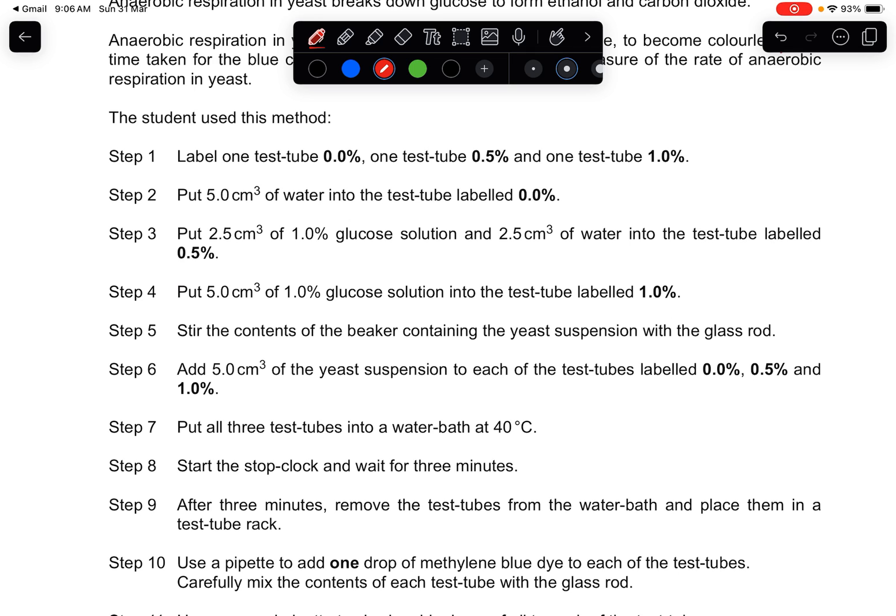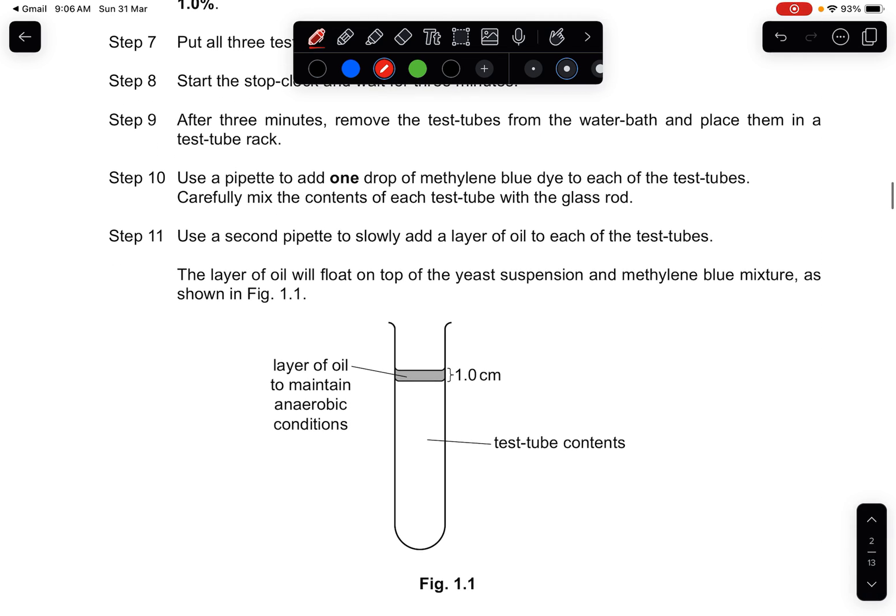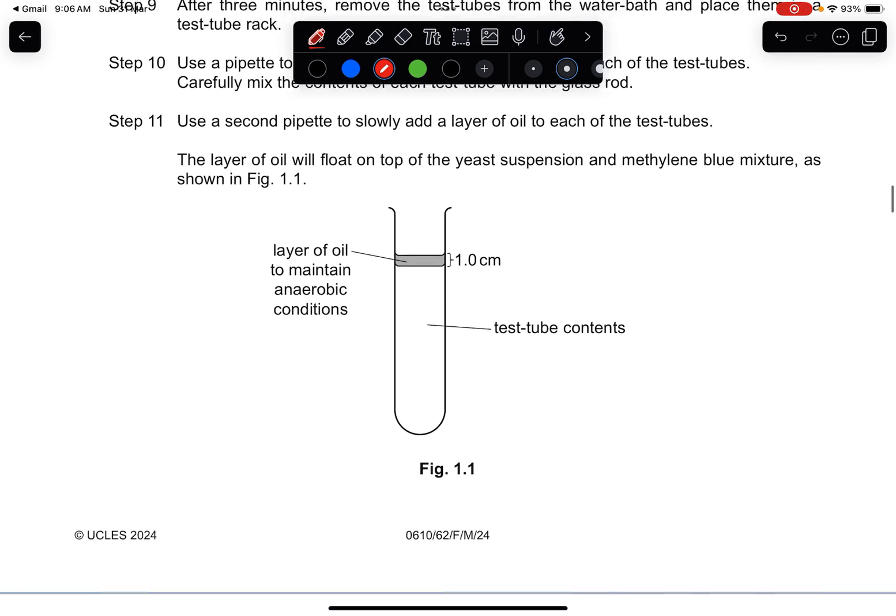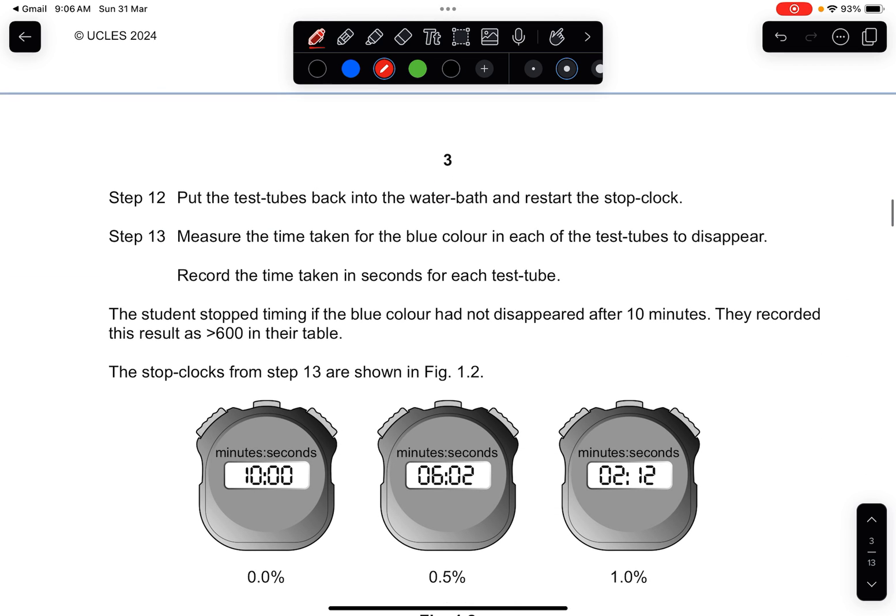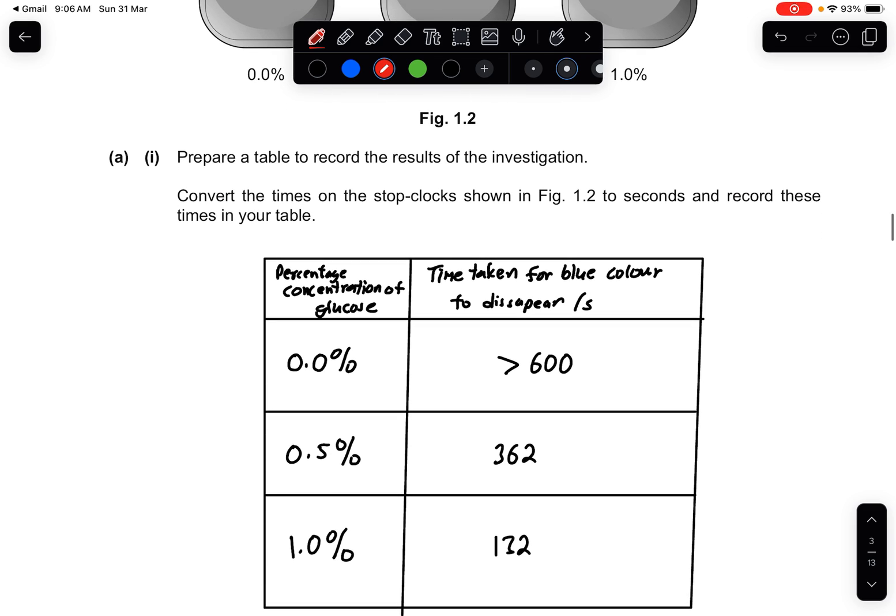They also told you that the thing that helped to identify the colour is using methylene blue and we know that it causes the blue dye to become colourless. Here are the methods that the question has stated. They've already told you each of the steps that you need to follow - label one test tube, one test tube of this, one test tube of that, then the steps of it. This will be useful for the later questions. So I will leave to you guys to read this.